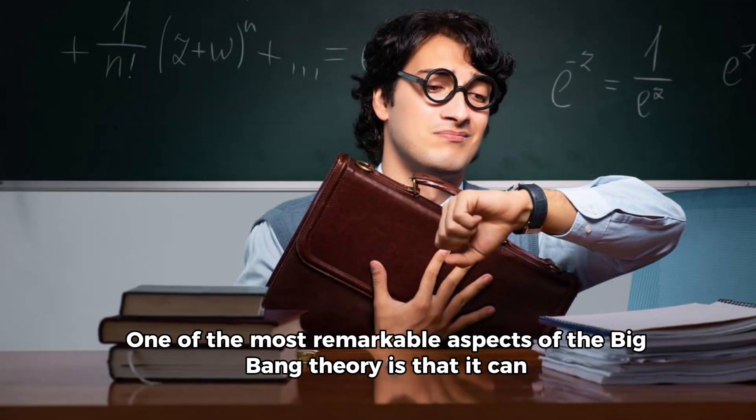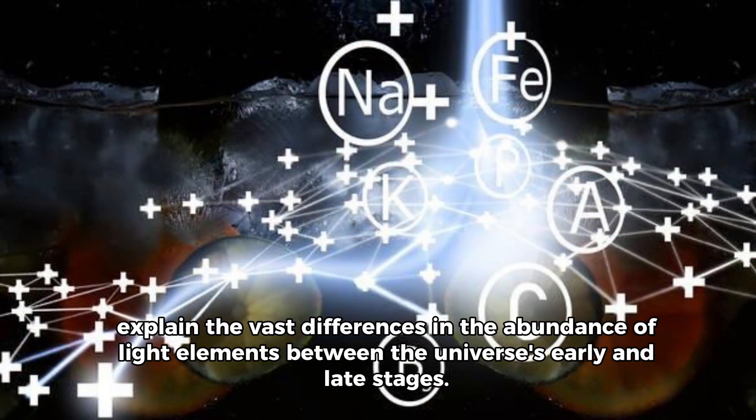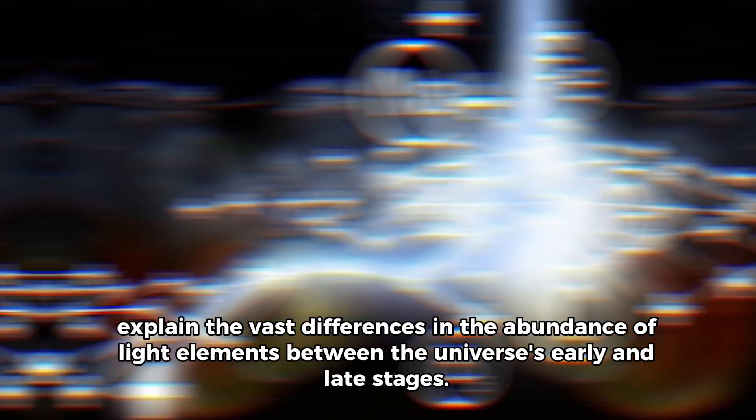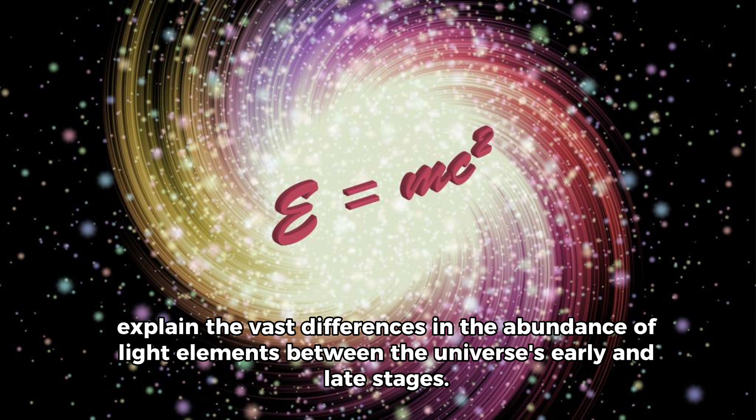One of the most remarkable aspects of the Big Bang Theory is that it can explain the vast differences in the abundance of light elements between the universe's early and late stages.